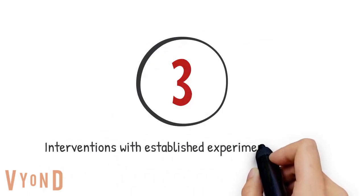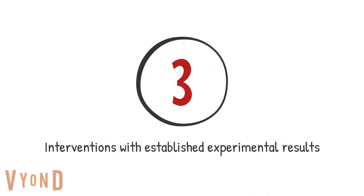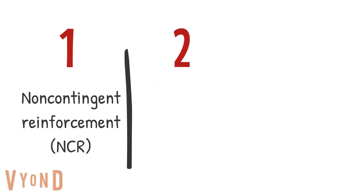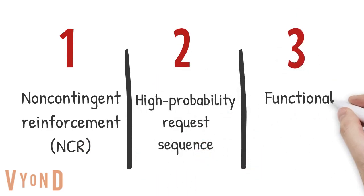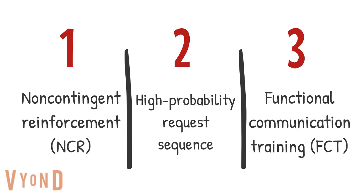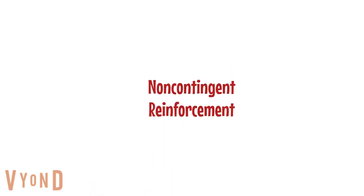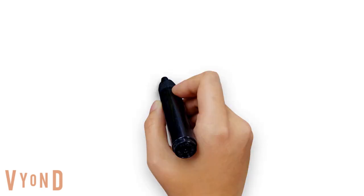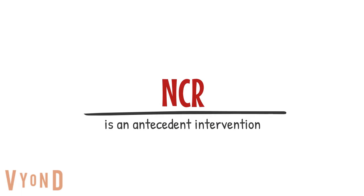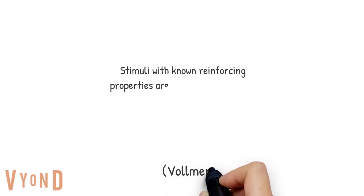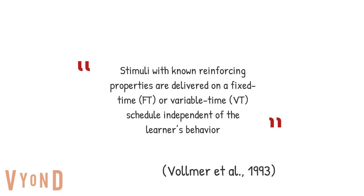There are three types of antecedent interventions with established experimental results: non-contingent reinforcement or NCR, high probability request sequence, and functional communication training or FCT. NCR is an antecedent intervention. The definition of NCR is stimuli with known reinforcing properties are delivered on a fixed time or variable time schedule independent of the learner's behavior — delivering known reinforcers independent of the behavior.